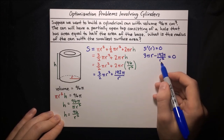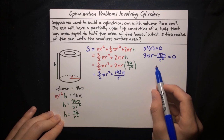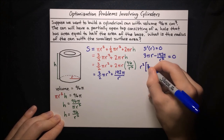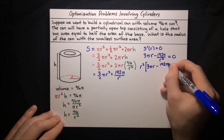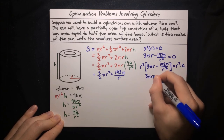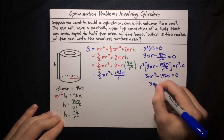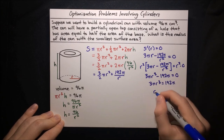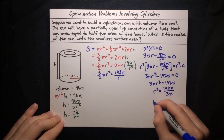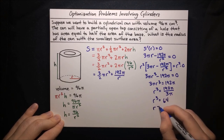Since r is non-zero (it's a physical length), multiply through by r squared: three pi r cubed minus 192 pi equals zero. Solving: three pi r cubed equals 192 pi, so r cubed equals 192 pi over 3 pi, which simplifies to 192 over 3, which is 64. Therefore r is the cube root of 64, which is 4.